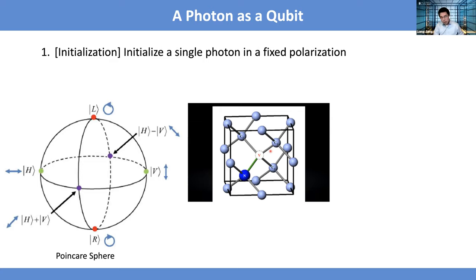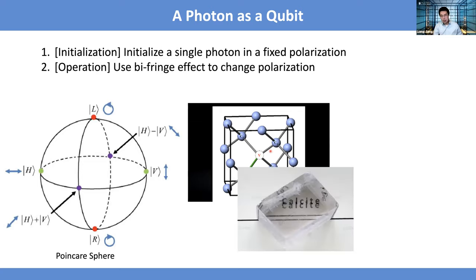In terms of optics, you can also think about how to control different polarizations using something called the birefringence effect. If you get a particular single crystal and put it over a single line, you'll actually see two lines. That's because the scattered photons from below will have two different polarizations — horizontal and vertical — which propagate through this crystal at different speeds.